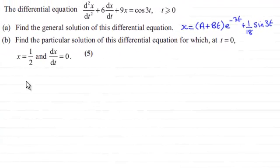Hi there. Now before we go on to part B of this question, remember in part A we had to find the general solution of this differential equation here. And this is the answer we got: x equals a plus bt all multiplied by e to the power minus 3t plus 1/18th sine 3t.